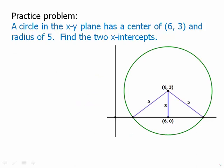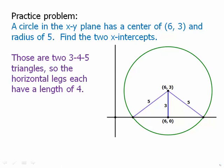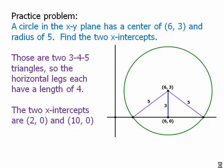So we have those two little triangles there. Each one has a hypotenuse of 5 and it's a distance of 3 above the X axis. So that vertical length is 3. Well, of course, what we have there are 2 three-four-five triangles. So the horizontal lengths each have a length of 4. And so starting at 6, we go 4 to the right and 4 to the left. We get two X intercepts of 2,0 and 10,0. And those are the X intercepts.